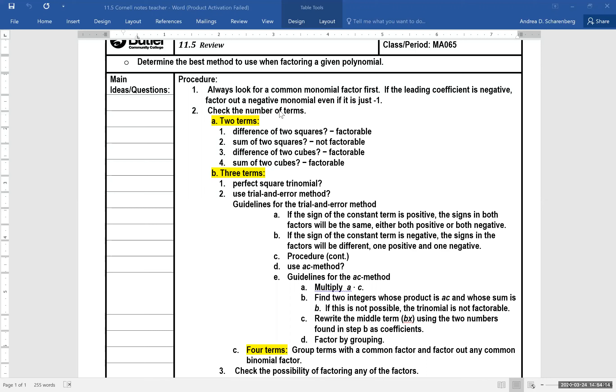Then take a look at the number of terms you have. Are there just two terms? If there are, is it the difference of two squares? That's factorable. That's where maybe you have x squared minus nine. Again, that would be x plus three, x minus three.